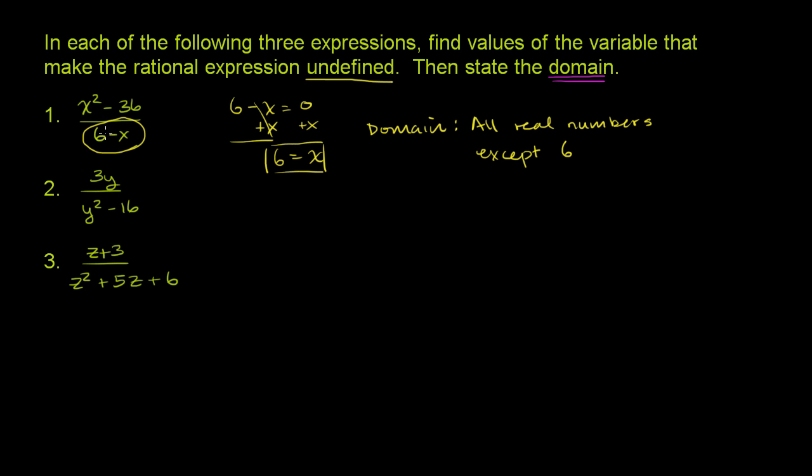So you could put any number into this for x and you will get a value if you take this as a function. It will be defined other than 6. If you put 6 here, you get an undefined value. You get 0 over 0. That is undefined, not acceptable, so you have to leave that out of the domain, the set of valid inputs, or the inputs for which this expression is defined.